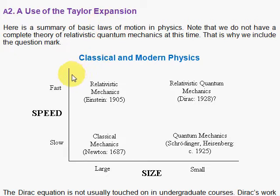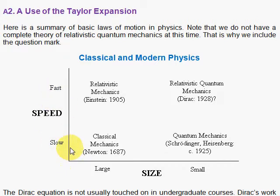Here we have a plot of speed versus size — it's not really a plot as much as it is a general block diagram. We have slow and then we have fast, so if you're down here you're at zero speed, and up here you're near the speed of light. On the horizontal axis we have size, with the easier physics on the left — the large — and then the microscopic to the right.